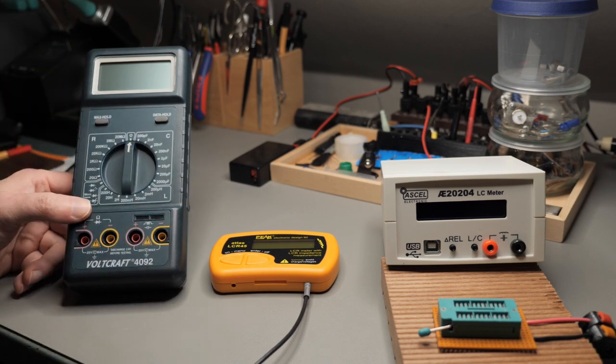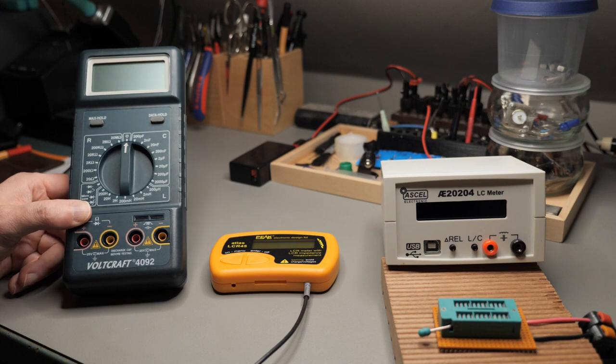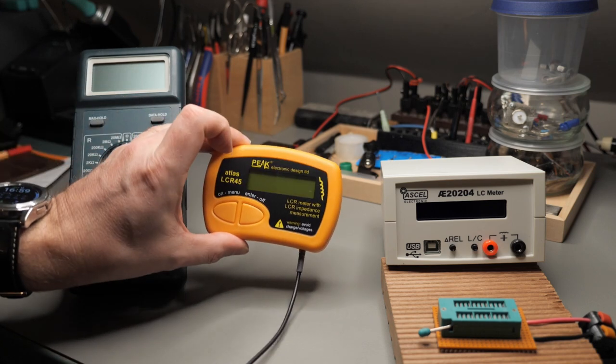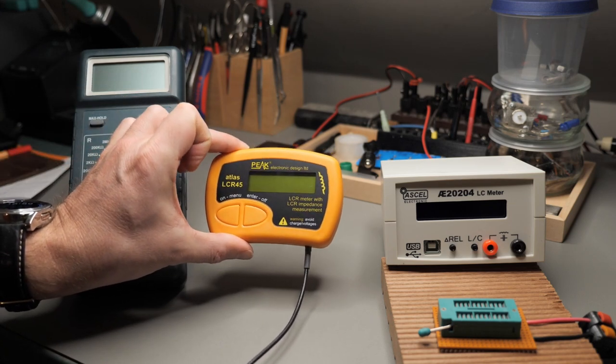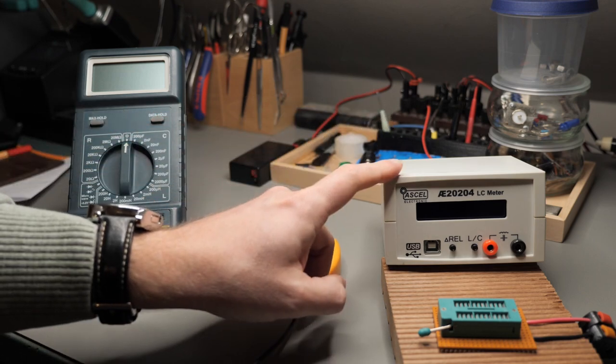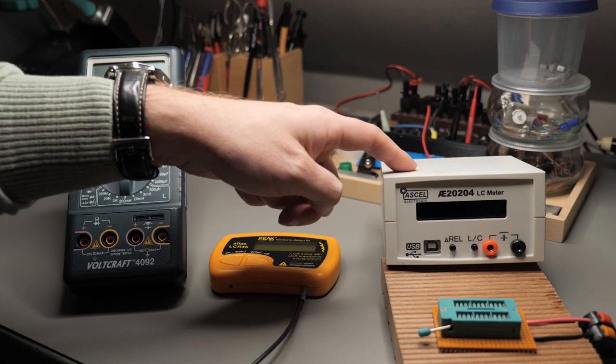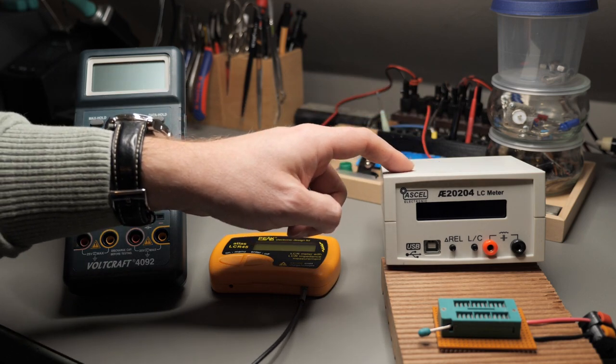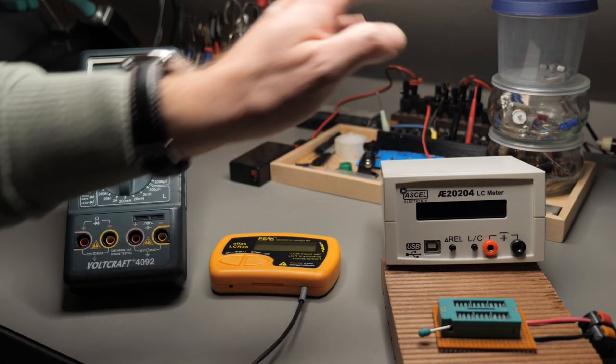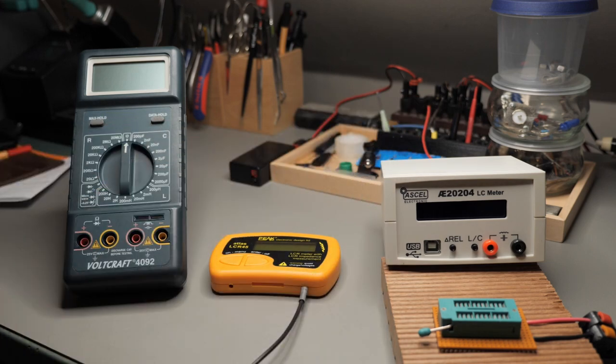On the left side I have a very old Voltcraft 49.2. In the middle my brand new shiny Peak Atlas LCR 45 and on the right side you see an ASCAL AE 2204. I've assembled this myself so it might contain bugs or mistakes. I think I put it together correctly but let's see.